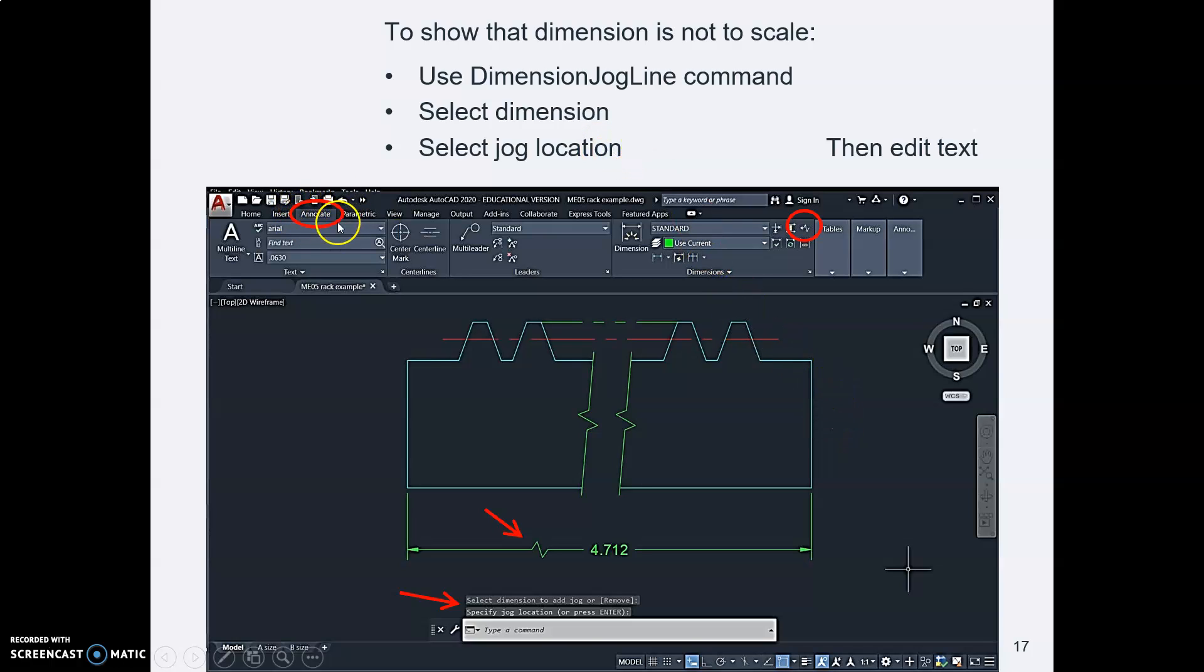Then, in the annotate ribbon, I don't think this command is in our regular home ribbon. I think you have to go to the annotate ribbon. In the dimension panel, there's an icon here that looks like a jog. Yay!